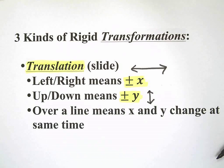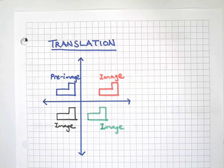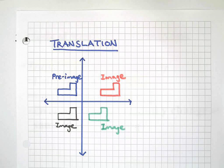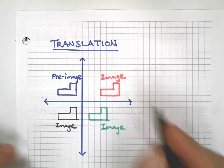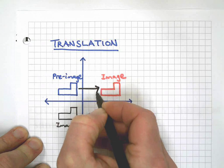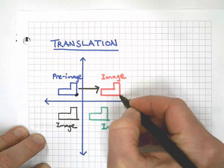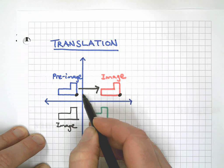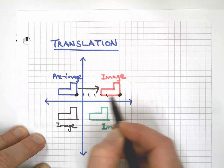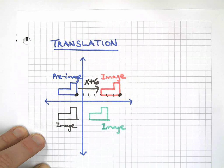Let me show you what I mean here. Here we've got a translation happening. You can see I've taken the pre-image and here's the image. In this case, if we take a point to compare to here, I've got one, two, three, four, five, six. That is an x plus six translation.